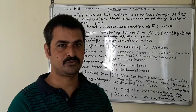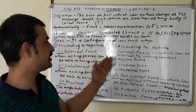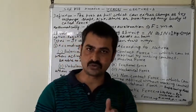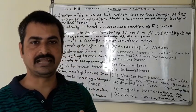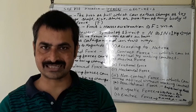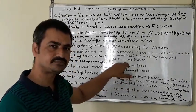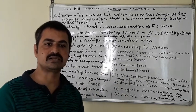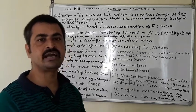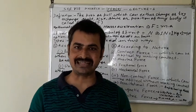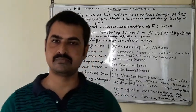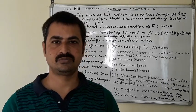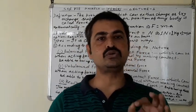On the basis of nature, the first type is contact force — force applied only by making physical contact. In this category we have three types: muscular force, frictional force, and mechanical force. Muscular force is the force applied by muscles — when we hold anything, move a table or chair, or when a horse pulls a cart, that is muscular force.